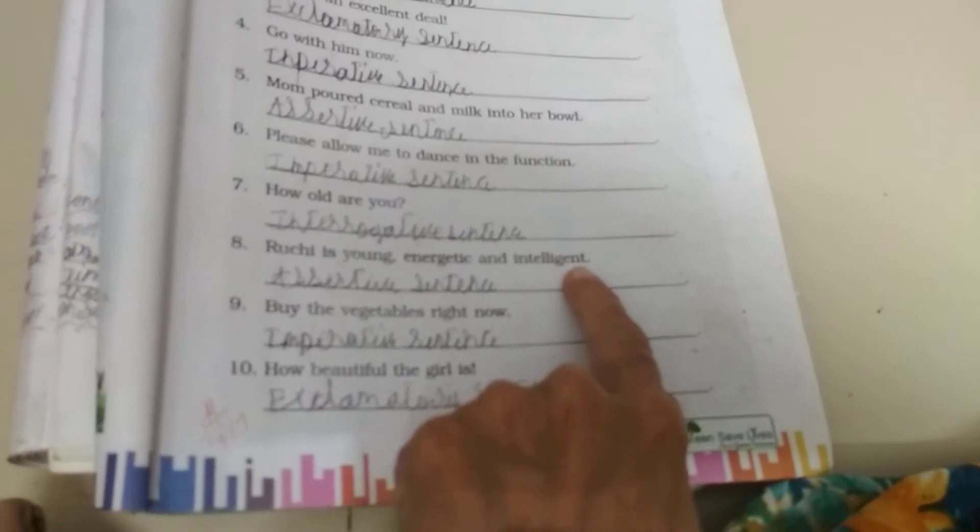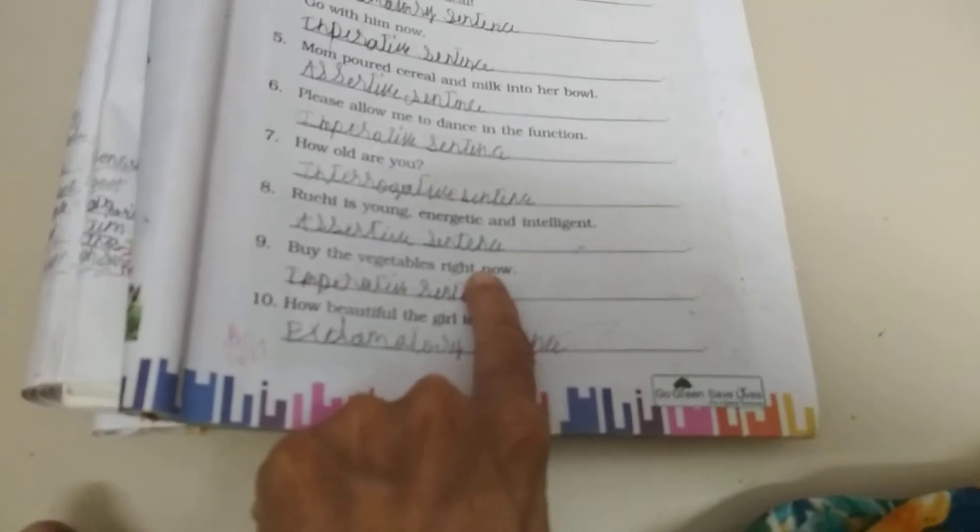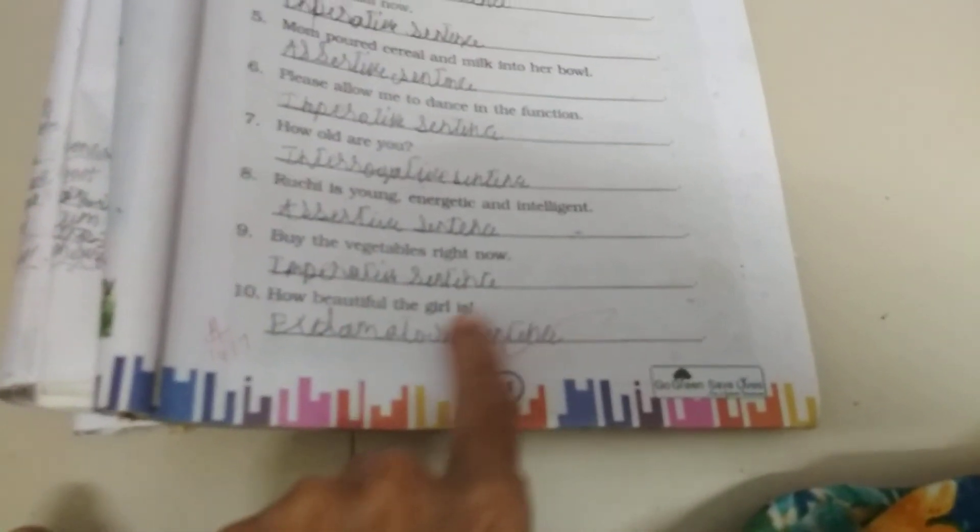How old are you? Interrogative sentence. She is young, energetic and intelligent. Assertive sentence. Buy the vegetables right now. This is a command. Imperative sentence. How beautiful the girl is. So, exclamatory sentence.